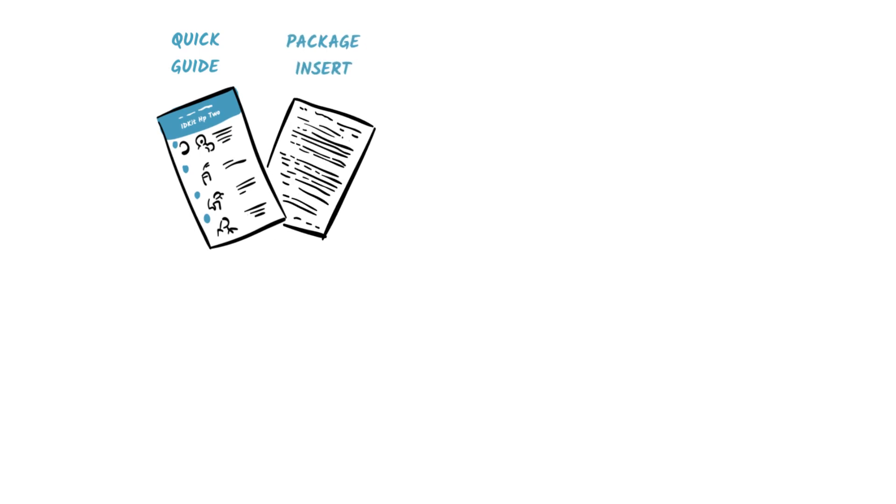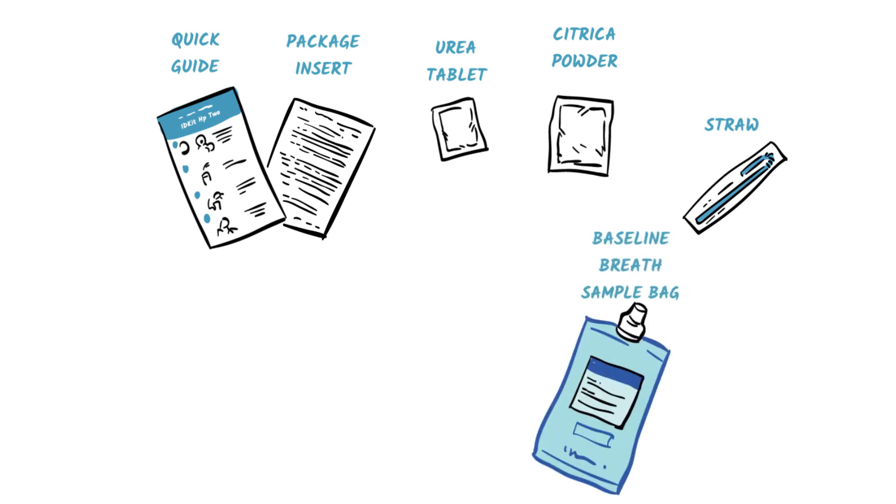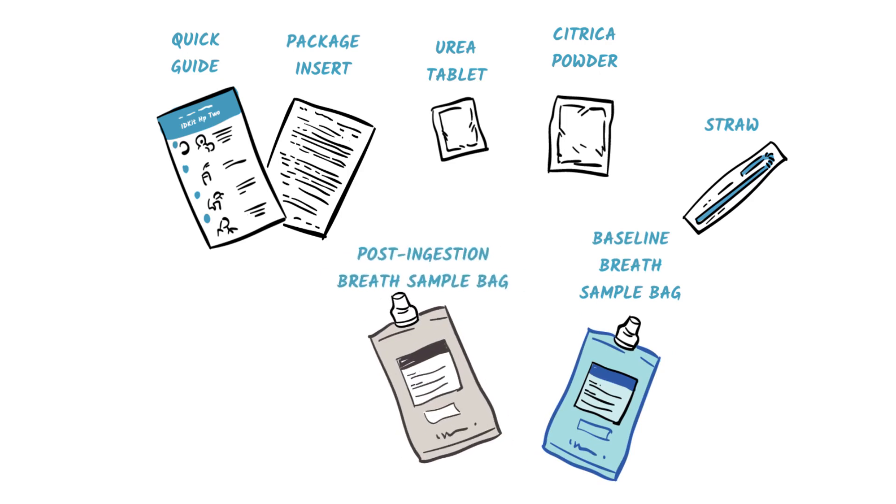Inside the kit you will find a quick guide and a package insert, one urea tablet in a small pouch, one citrica powder pouch, one straw for drinking, one blue baseline breath sample bag, one gray post-ingestion breath sample bag, and a Ziploc bag for sending the breath samples to the lab.